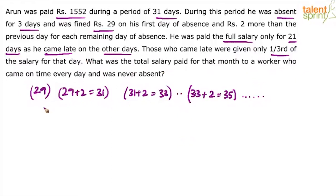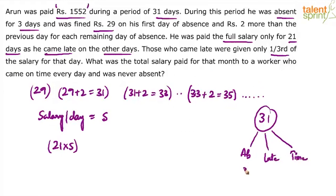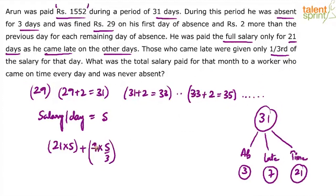Let us assume that salary per day is S. You get S rupees per day. All we need to do is balance this 1552. He was paid full salary for 21 days, so he gets 21 into S. For the remaining 7 days where he came late, he will get only one third of the salary, so 7 into S by 3.